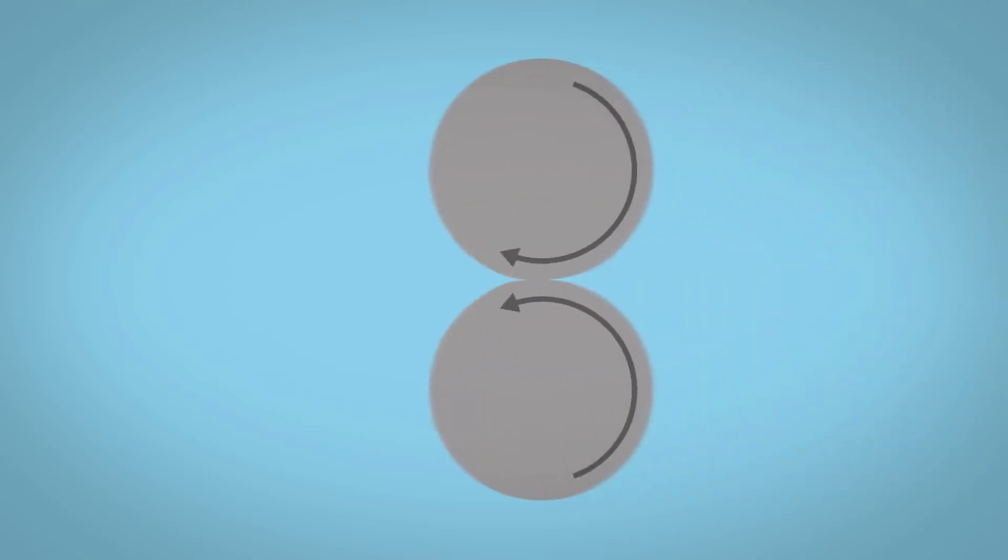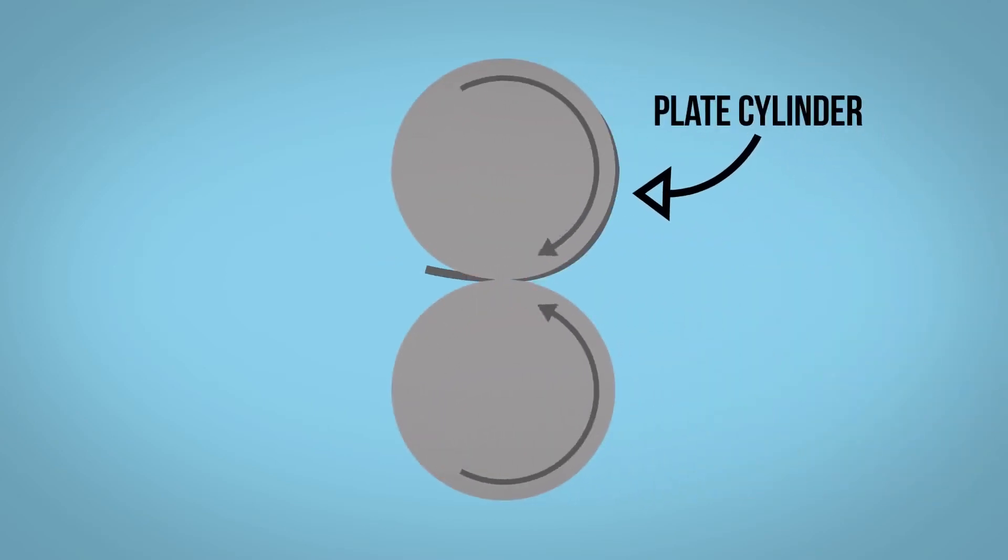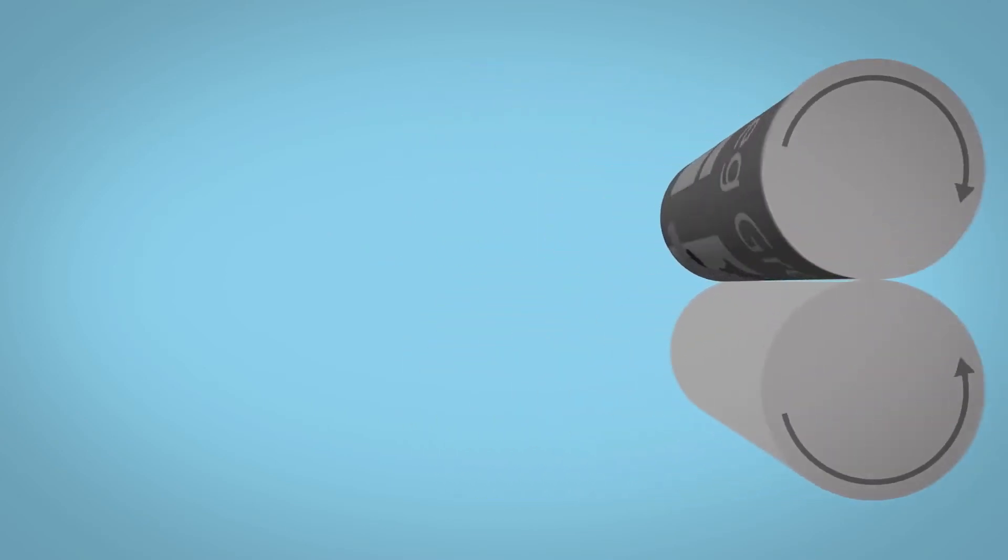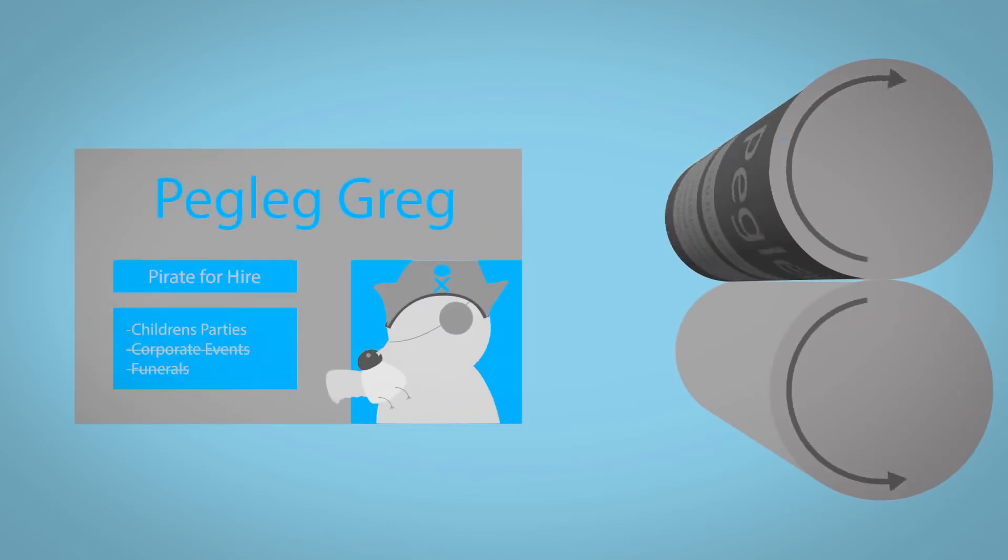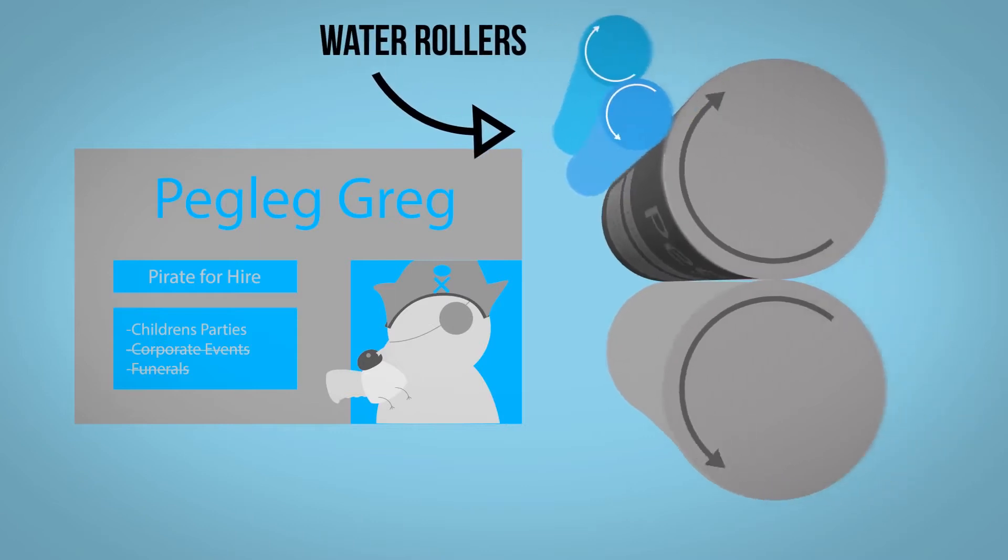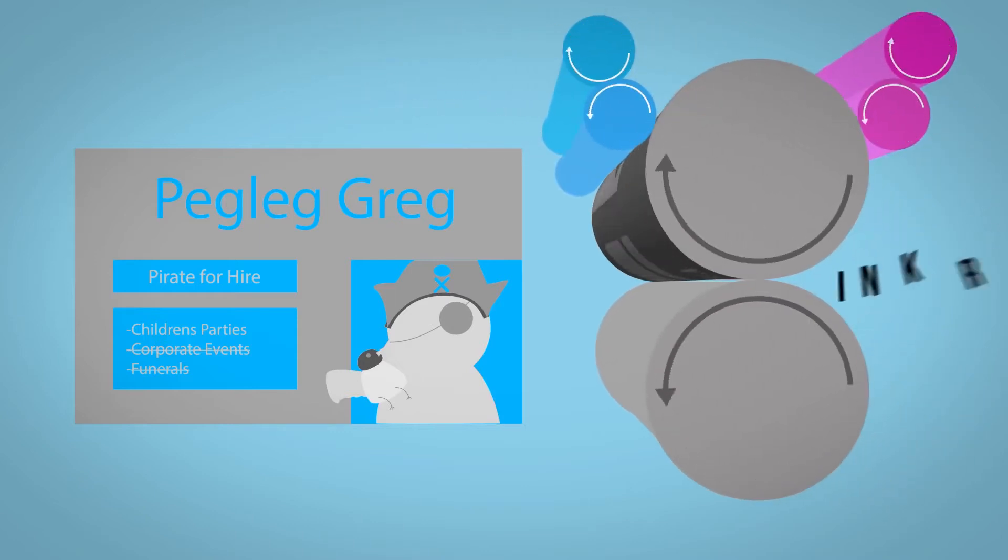Each plate is then loaded onto a roller, known as the plate cylinder. Each revolution of this cylinder dampens the non-image area of the plate with water from the dampening system. A vegetable oil based ink is then passed through a series of rollers and finally onto the image area of the plate.